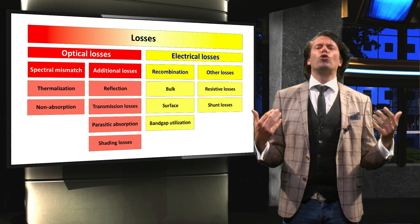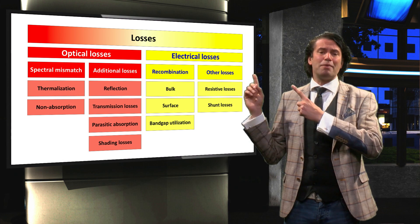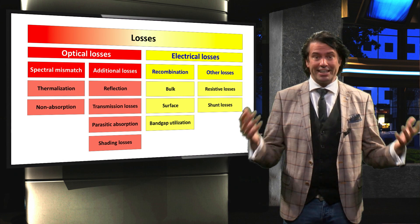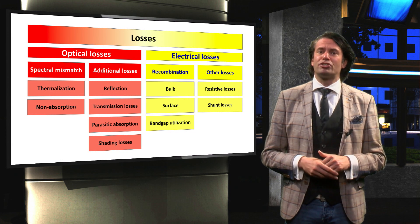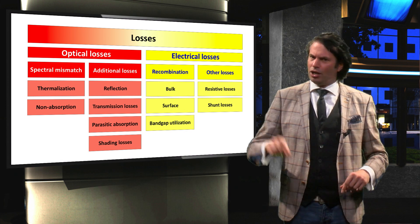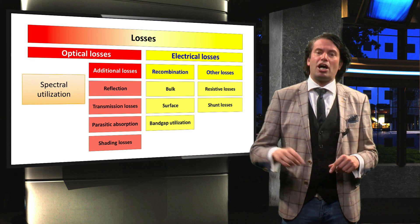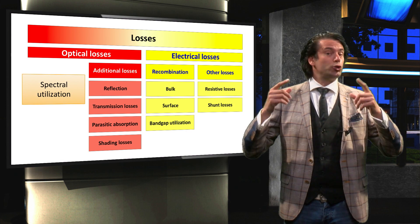So this is what the full overview of the losses in any type of solar cell looks like. We can translate these loss mechanisms into three major solar cell design rules. The losses due to the spectral mismatch are the subject of spectral utilization.